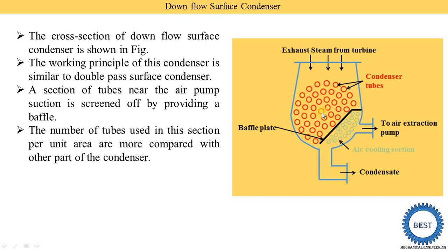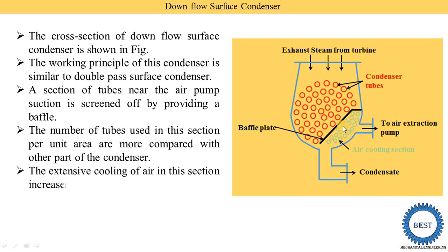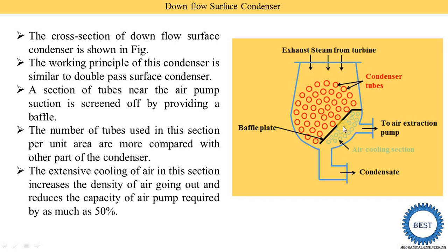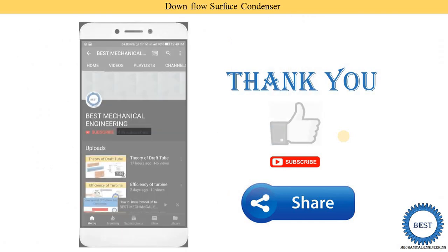Suppose in the main region one square meter has eight tubes, and a similar square in the air cooling section has 12 or 15 tubes — more tubes are provided here. The extensive cooling of air in this section increases the density of air. Due to this, we can reduce the capacity of the air pump required by as much as 50%.